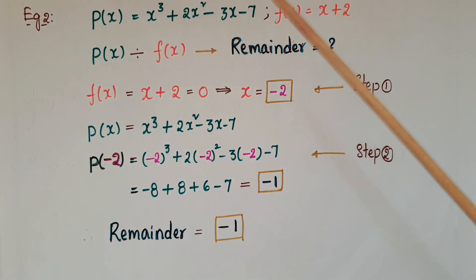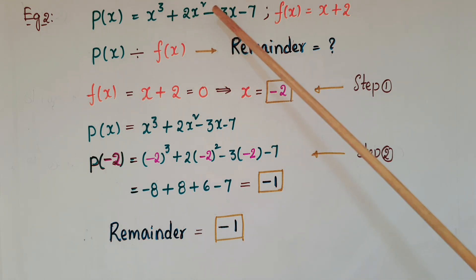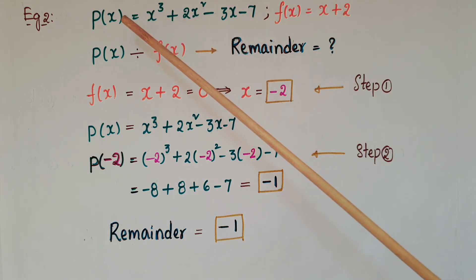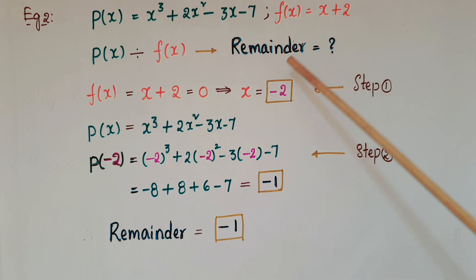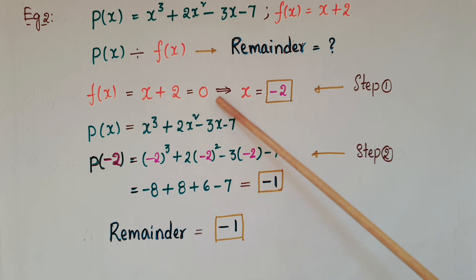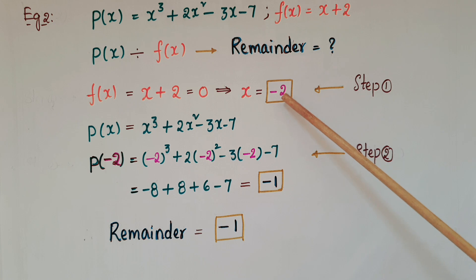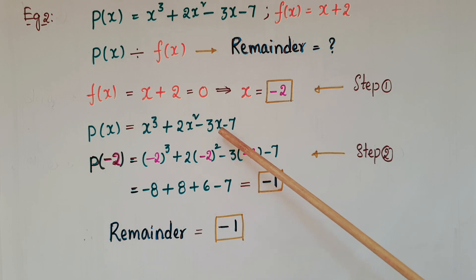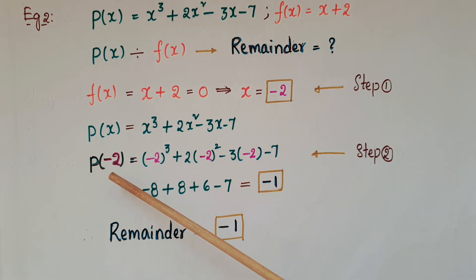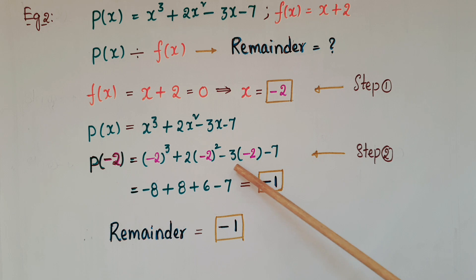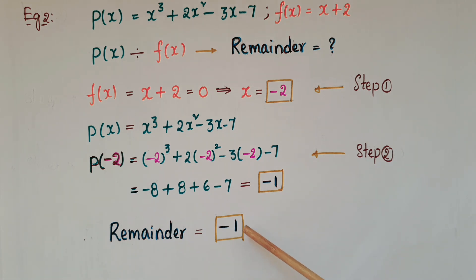Now consider this example: p(x) = x³ + 2x² - 3x - 7 and f(x) = x + 2. We have to find the remainder when p(x) is divided by f(x). First, make f(x) = 0: x + 2 = 0, so x = -2. Then replace x = -2 into p(x): p(-2) = (-2)³ + 2(-2)² - 3(-2) - 7 = -8 + 8 + 6 - 7 = -1. So the remainder is -1.